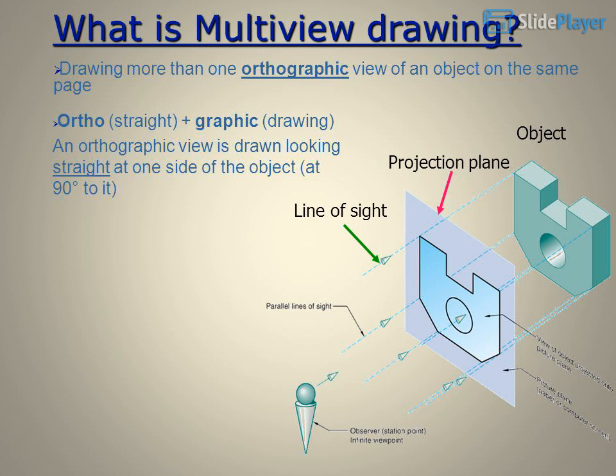What is multi-view drawing? It is drawing more than one orthographic view of an object on the same page. The word orthographic comes from 'ortho' meaning straight, and 'graphic' meaning drawing.